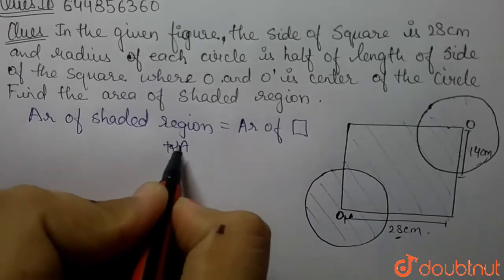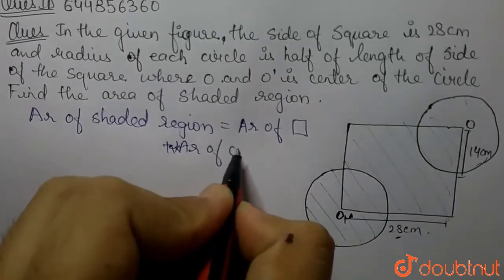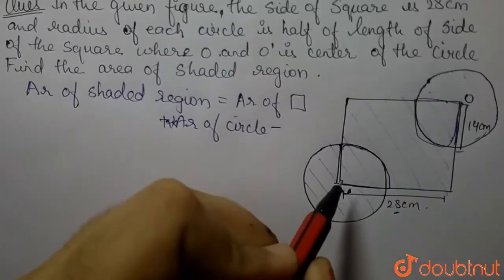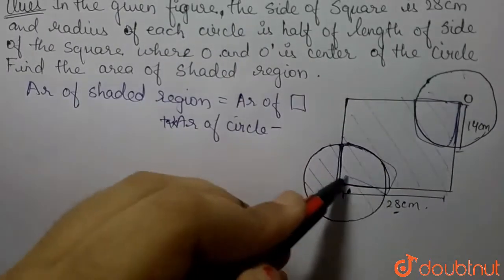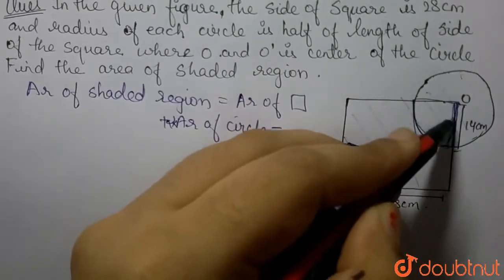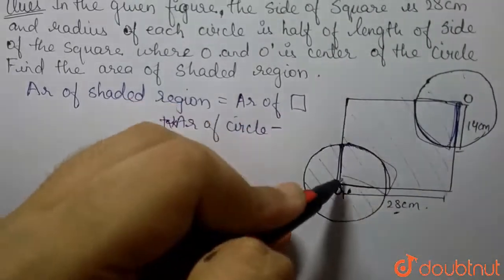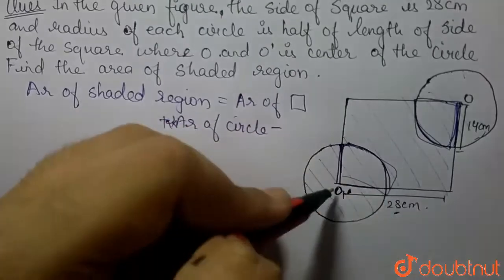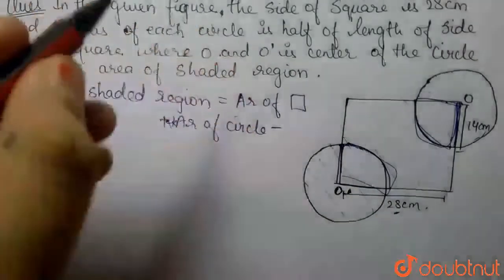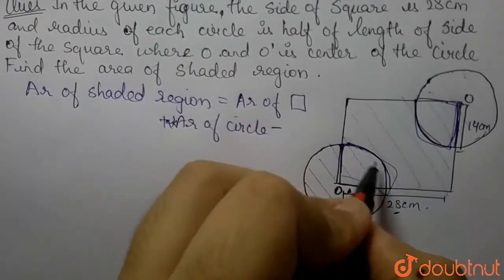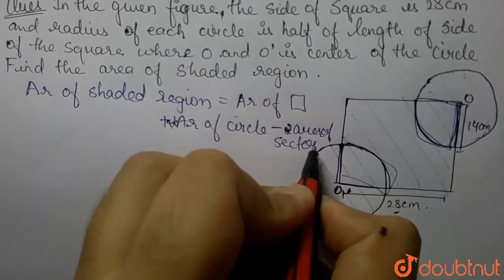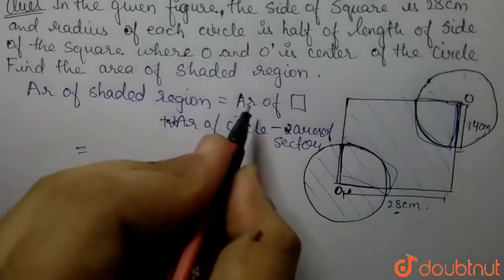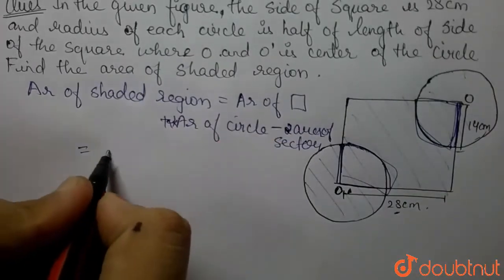We can see in this figure that these two sectors are counted twice - one time with the square and one time with the circle. So we can subtract these sectors one time to get the correct area of the shaded region.